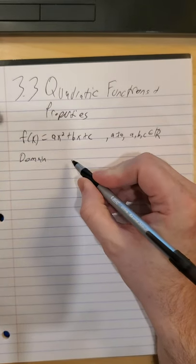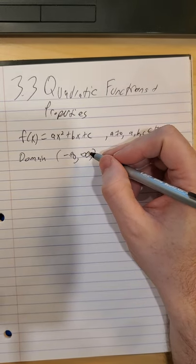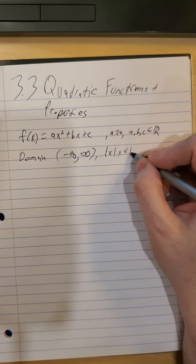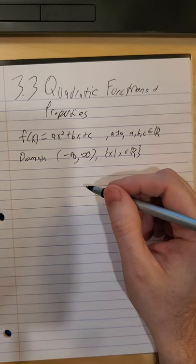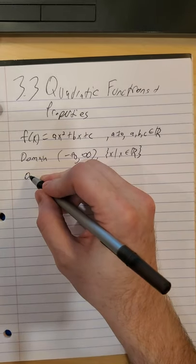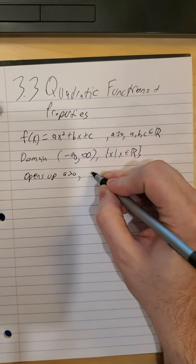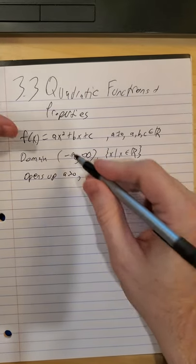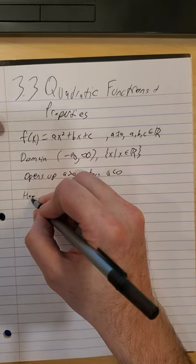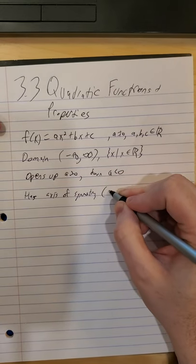The domain of any quadratic function is negative infinity to infinity. You pick a real number, you can write it in interval or set builder. You pick a real number you can plug it into a function f that's a quadratic. As far as directions that the parabola will open: up for a greater than zero, down for a less than zero. So a equals zero, we have a line. Also has what we refer to as an axis of symmetry, sometimes also called the line of symmetry.